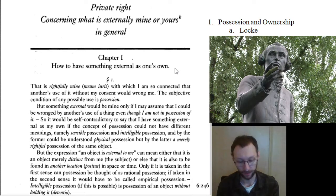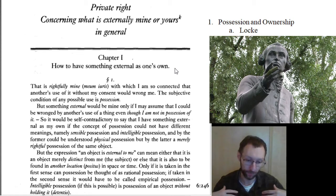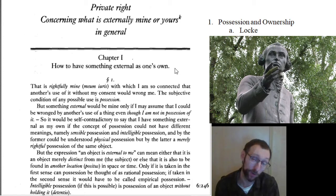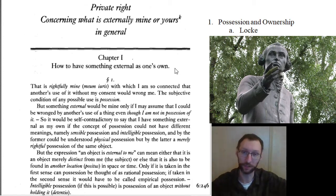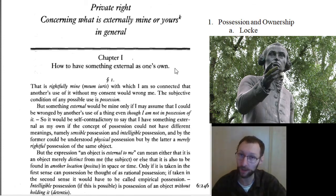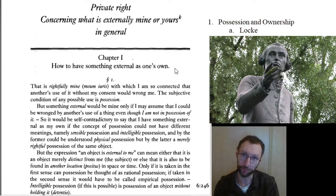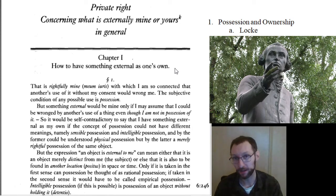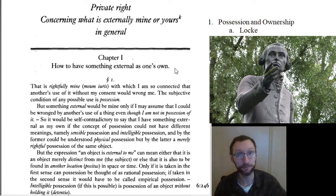You can come to own something by laboring on it. You own your body, and so you own your labor, and so when you put the labor that you own into something, it becomes yours. Say you take a section of land, clear it off, plant a bunch of crops, and then harvest them. Because all of that is your labor, you now own that land and those crops. That's how you come to have something external as your own, according to Locke — you mix your labor with it. Now, you can't do it for absolutely anything.